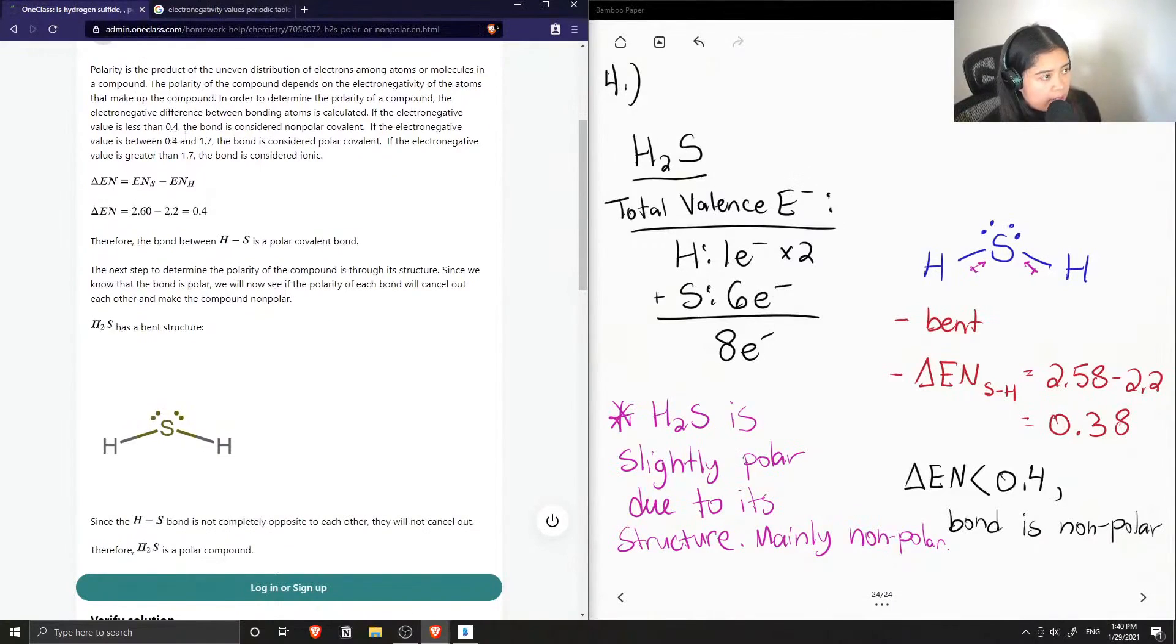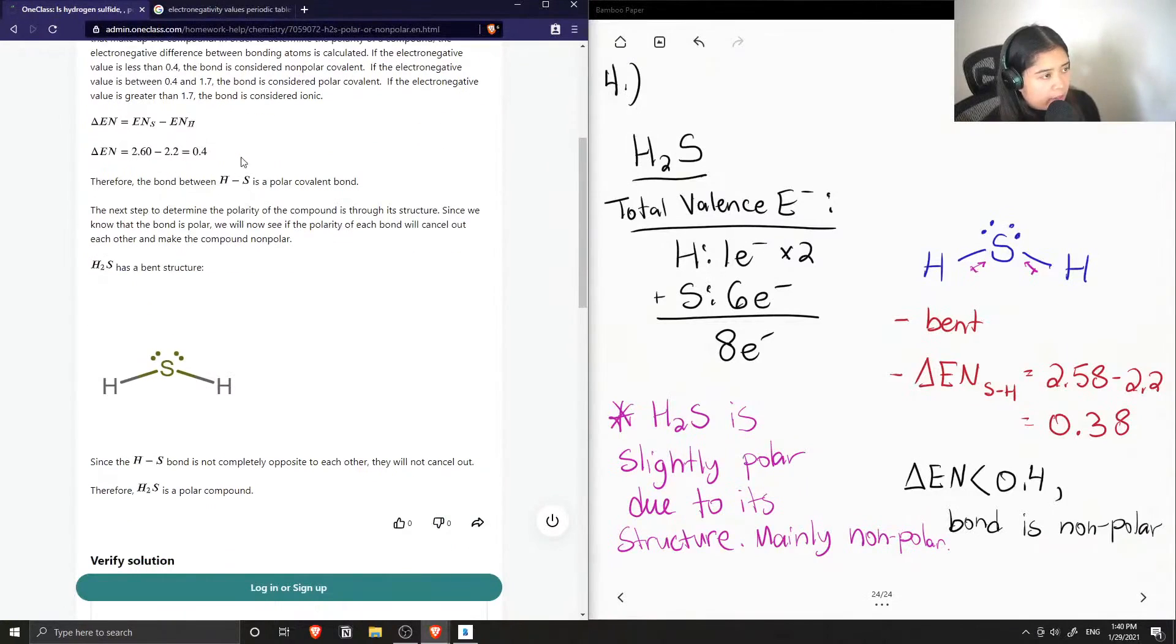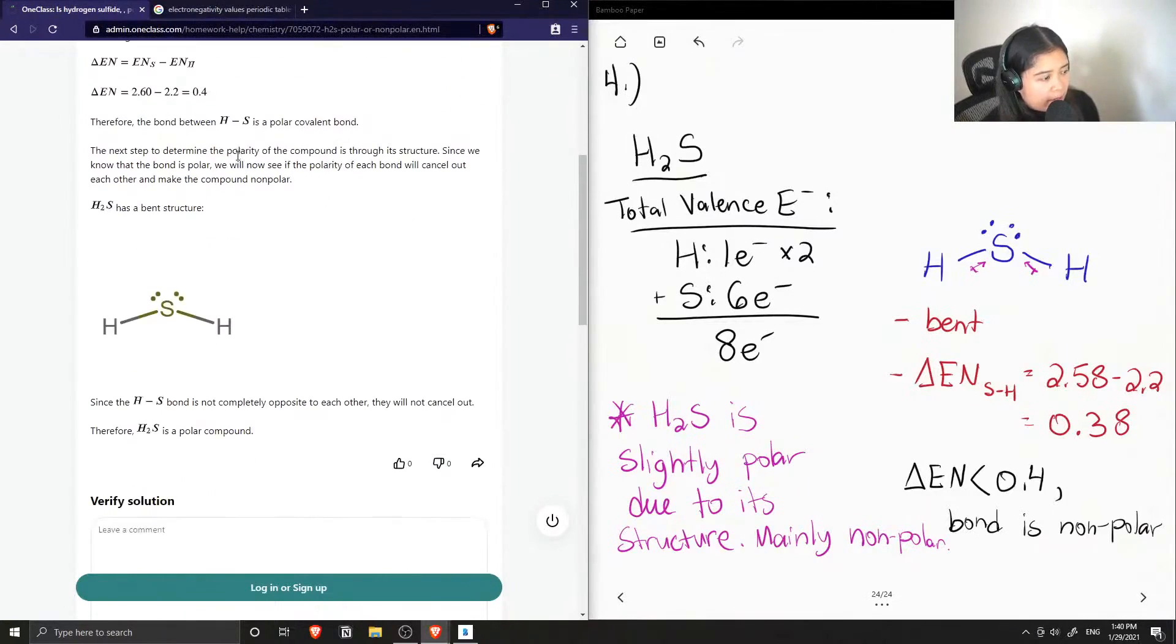The electronegativity value less than 0.4 is considered nonpolar, and if it's between 0.4 and 1.7 it's considered polar. If it's greater than 1.7 it's considered ionic.